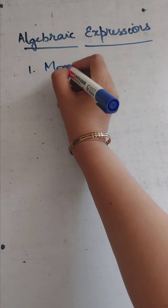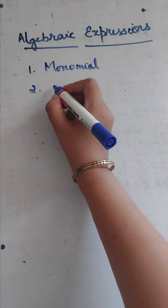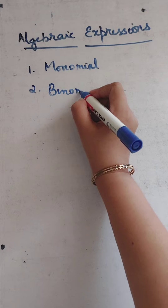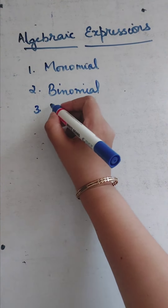The first one is monomial, second one is binomial, third one is trinomial, and the fourth one is polynomial. Now, what is monomial? Monomial means we will have only one term in the expression. For example, 6x or 8xy — all these are monomial expressions, that is, we will have only one term.